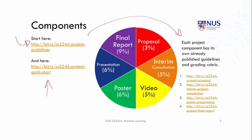To give you a walkthrough, you will have six components: a proposal, an interim consultation, and possibly a second one if you participate in the public project showcase. Towards the end of the semester, you'll produce three deliverables — a presentation, a poster, and a non-technical video — and finally, at the very end of the semester, you'll submit your final report.